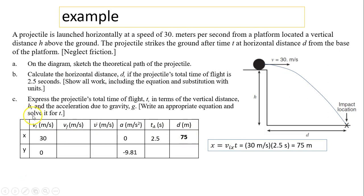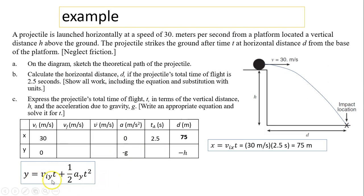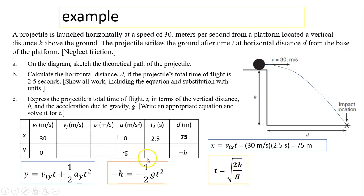Part C is a bit more complex because you express the answer in symbols. Express the projectile's total time of flight T in terms of vertical distance H and acceleration G. In the vertical direction, y equals negative H and Ay equals negative G. Since Viy equals zero, the equation simplifies to negative H equals negative one-half G t squared. Solving gives T equals the square root of 2H over G.